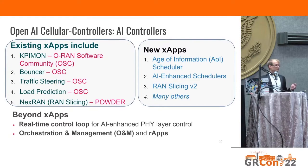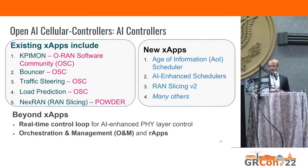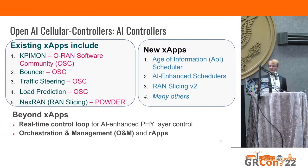Looking beyond X-apps, what we're interested in is AI control of the physical layer or lower layers, which requires a faster cycle of control. This is currently not supported by ORAN, but we want to investigate it. And of course the R-apps — microservices that control the RAN at slower timescales — for example setting new policies or optimizing sectors.